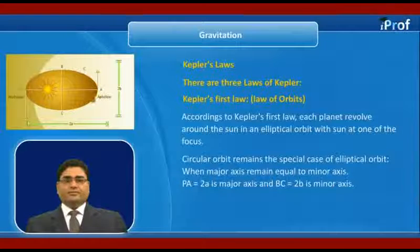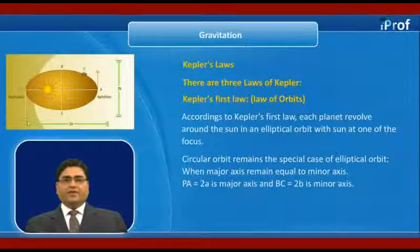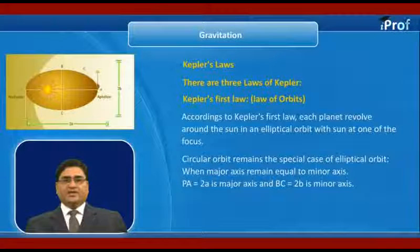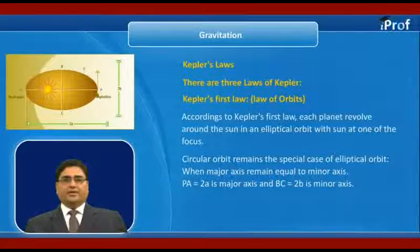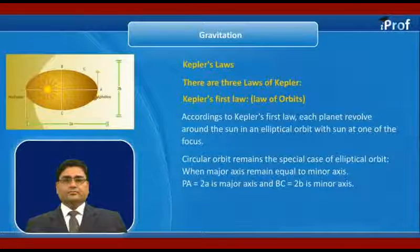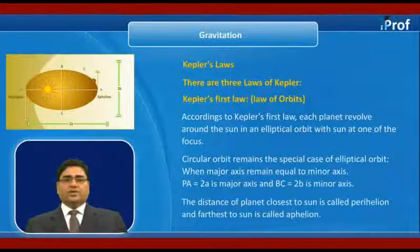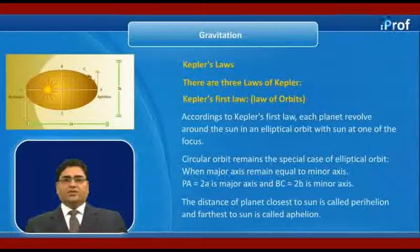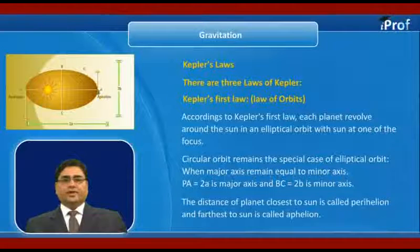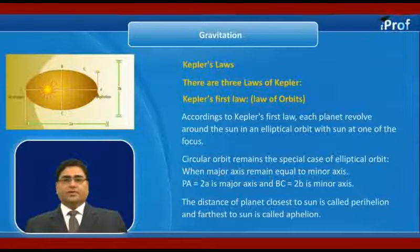In the given figure, PA equal to 2A is major axis and VC equal to 2B is minor axis. The distance of planet closest to Sun is called perihelion and farthest to Sun is called aphelion.